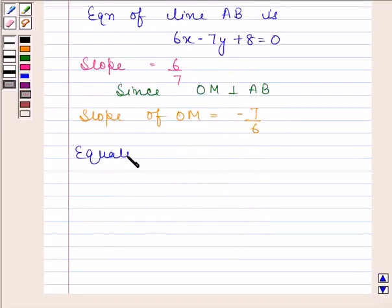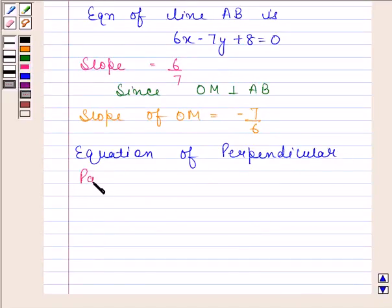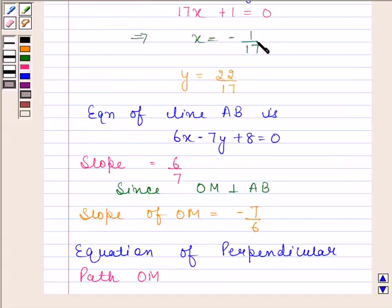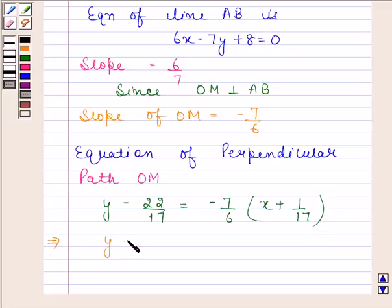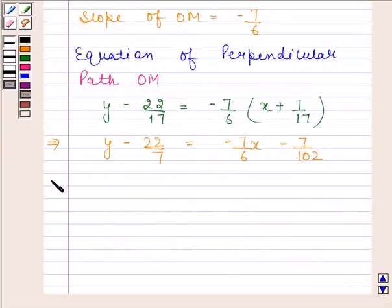Now we will find equation of perpendicular path OM. This path is passing through the point minus 1 by 17 and 22 by 17 and is having slope minus 7 by 6. So equation of OM is y minus 22 by 17 equals minus 7 by 6 into x plus 1 by 17. Now this implies y minus 22 by 17 equals minus 7 by 6x minus 7 by 102.